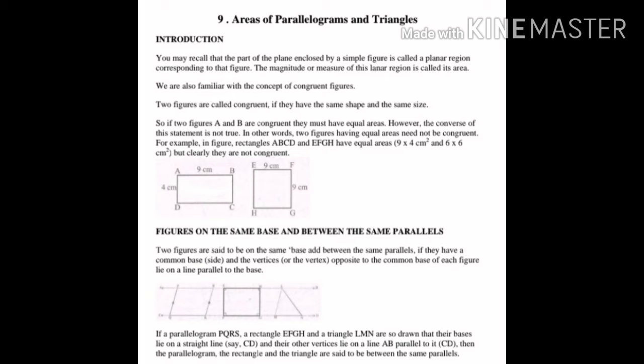You can see the two diagrams are different — one is a square and one is a rectangle. Their shape and size are not the same, so they are not congruent to each other. Now let's look at figures on the same base and between the same parallels.